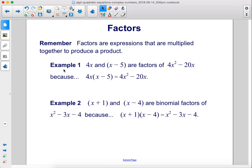Example 1: 4x and x minus 5 are factors of 4x squared minus 20x because 4x times x minus 5 equals 4x squared minus 20x.